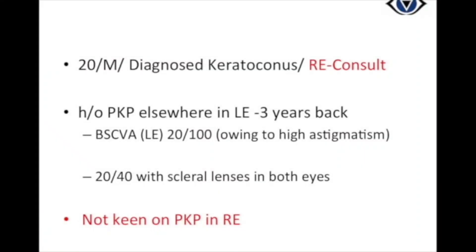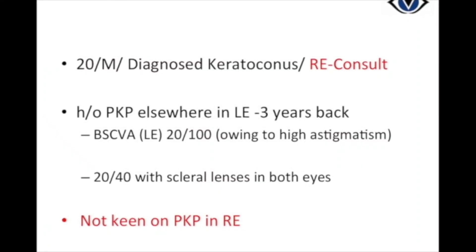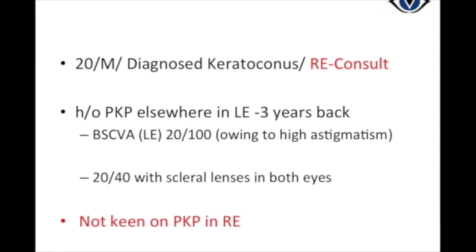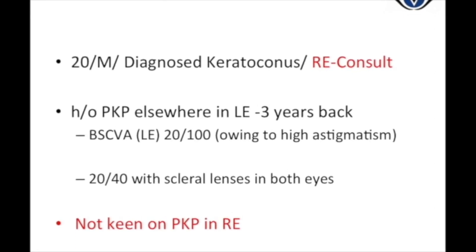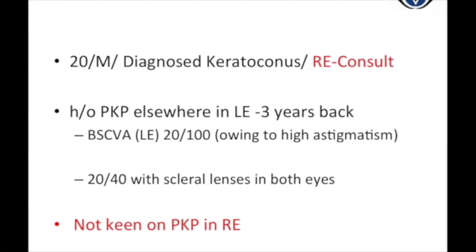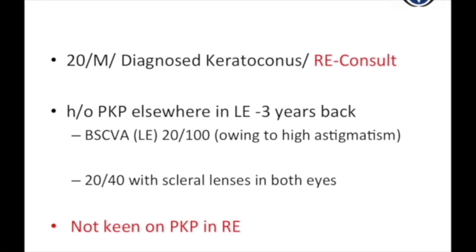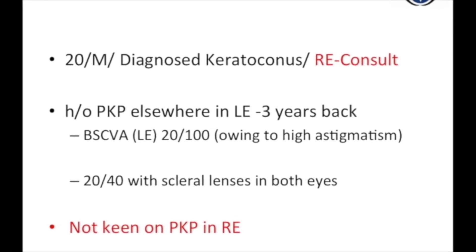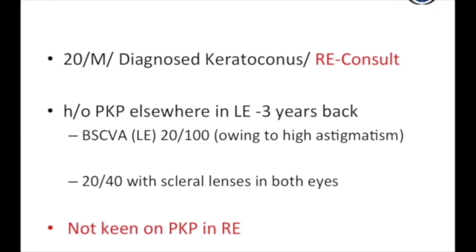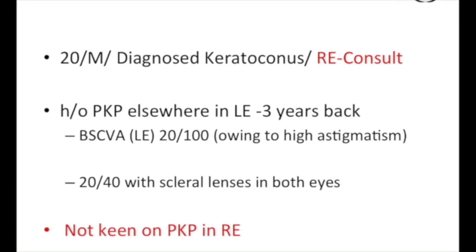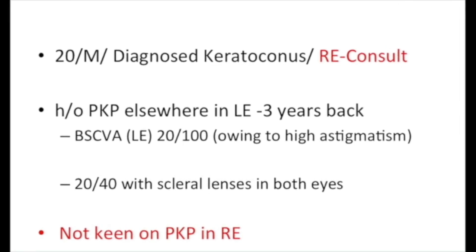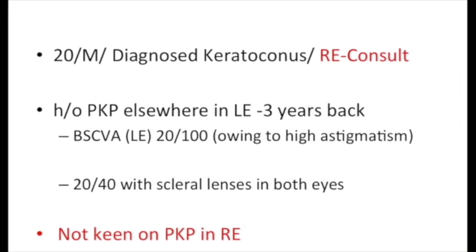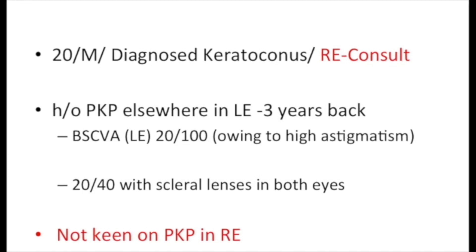This 20-year-old boy with progressive keratoconus in the right eye presented to us for consultation. He had undergone penetrating keratoplasty in the left eye 3 years back elsewhere but was not happy with the outcome, mainly due to high astigmatism, and was looking for options other than sutured corneal transplant in the right eye.